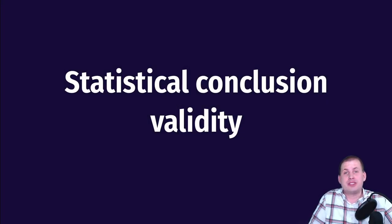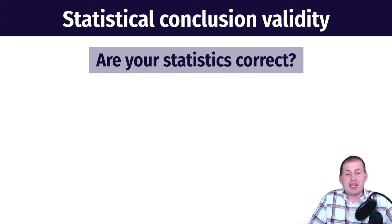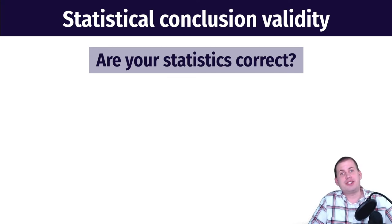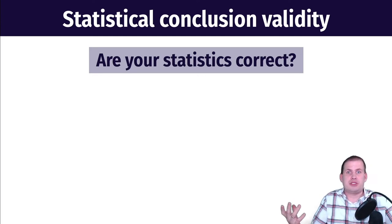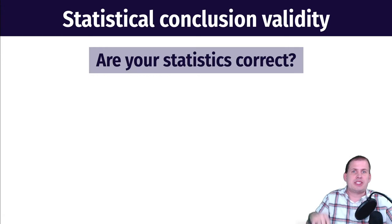The next form of validity we're going to talk about is statistical conclusion validity. This is the idea that you want to make sure your statistics and your analysis are correct. There are a whole bunch of different ways that your analysis itself can go wrong. You can have typos in your code — we talked about that when we discussed reproducibility and errors introduced with Excel — where typos distort your actual results. But beyond just human error, there are a whole bunch of other statistical ways that your results can go wrong. We'll talk about each of these briefly after I list them.